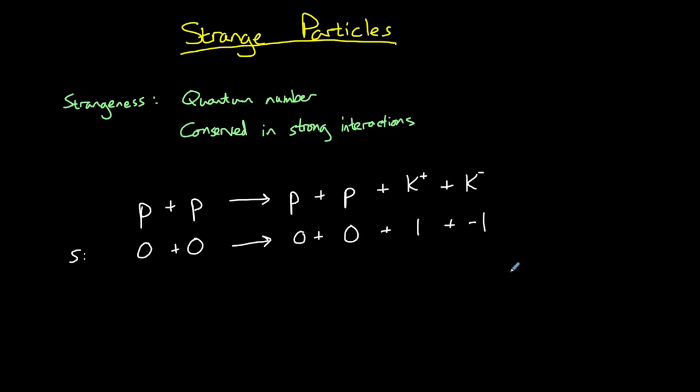Strange particles are formed by the strong interaction but they decay via the weak interaction. And since strangeness is not always conserved in the weak interaction it can change. It can change by zero, minus one or plus one in weak interactions.